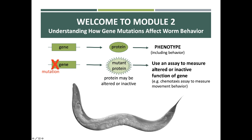Having a convenient assay is essential in understanding how a mutation can affect a given protein. To test this with the worms, we're going to do a chemotaxis assay. You can tell from the name — chemo for chemical and taxis for movement — that this will be an assay looking at how worms move or don't move towards a particular chemical.